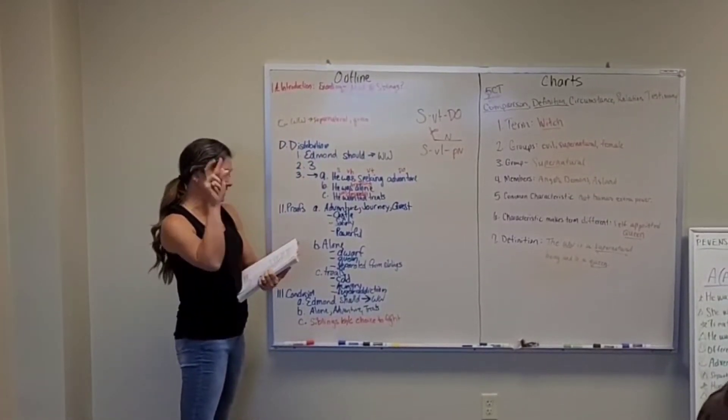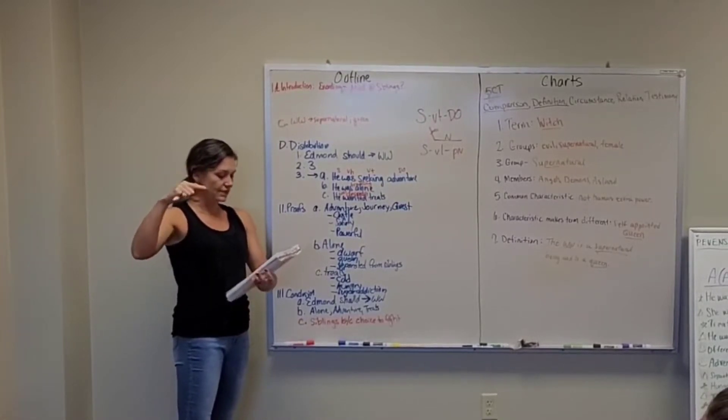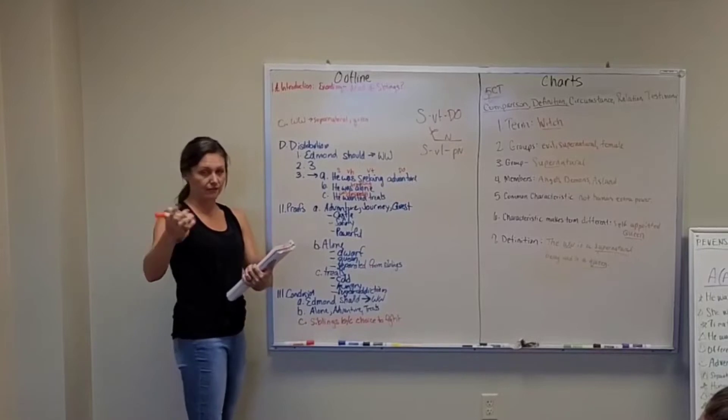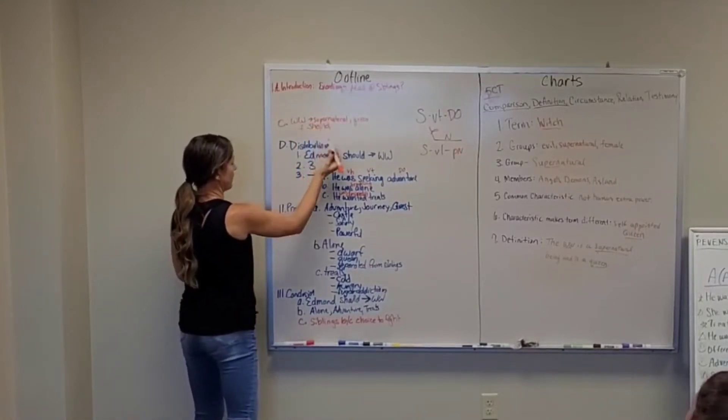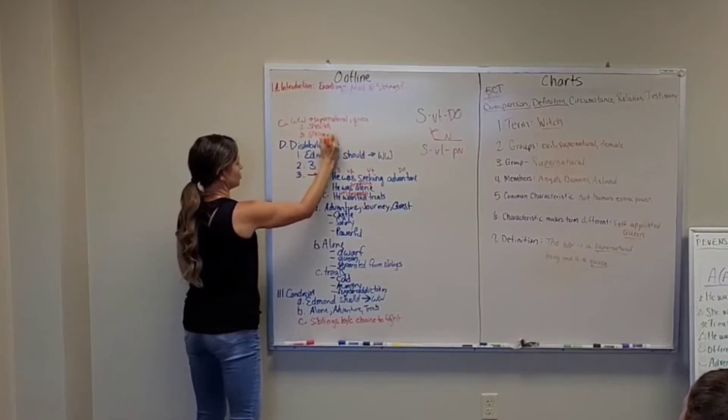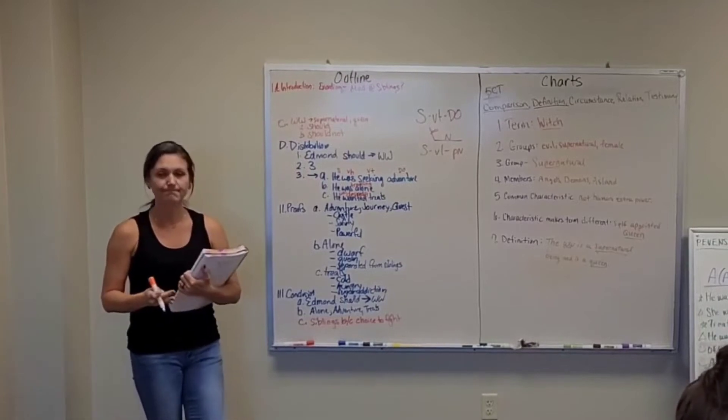Then underneath it says division. We're not actually writing anything for division. That's just like a category. The division is listing both the affirmative and the negative. So that is Edmund should. Some people believe Edmund should have followed. Some people believe Edmund should not have followed. That's your disagreement.